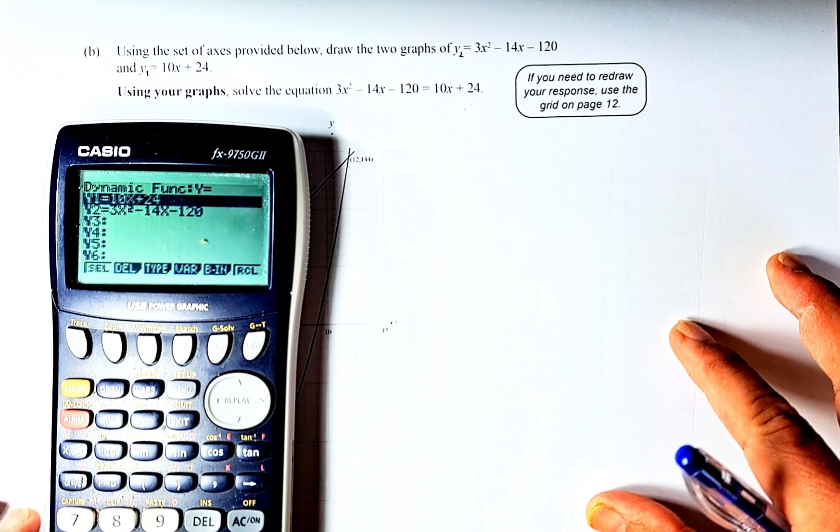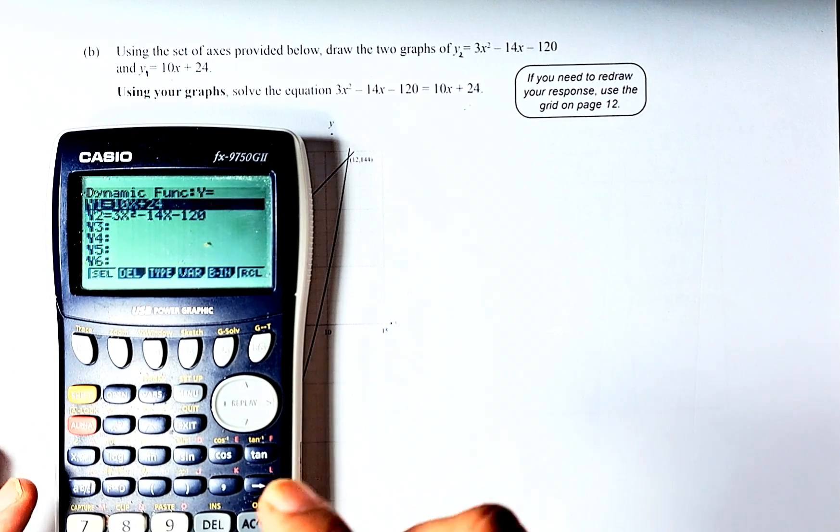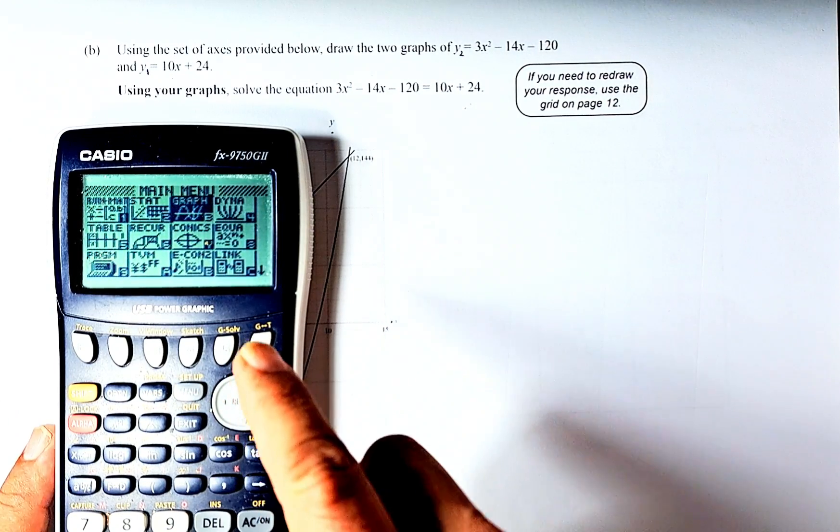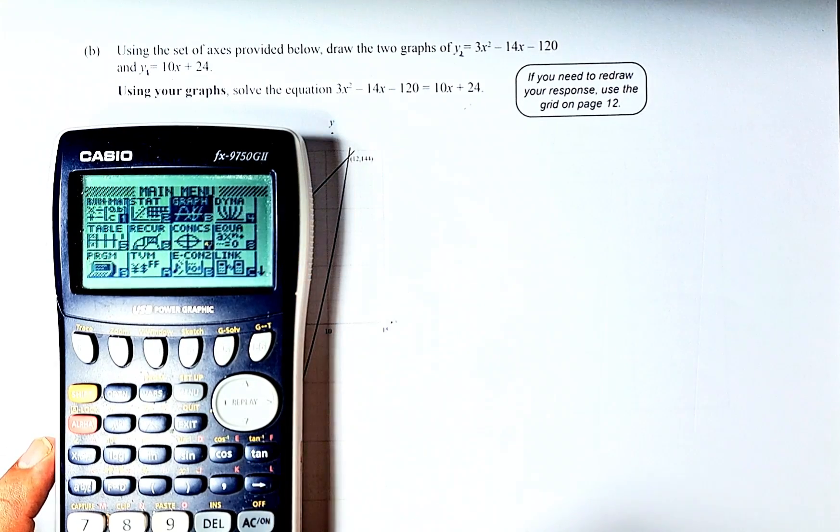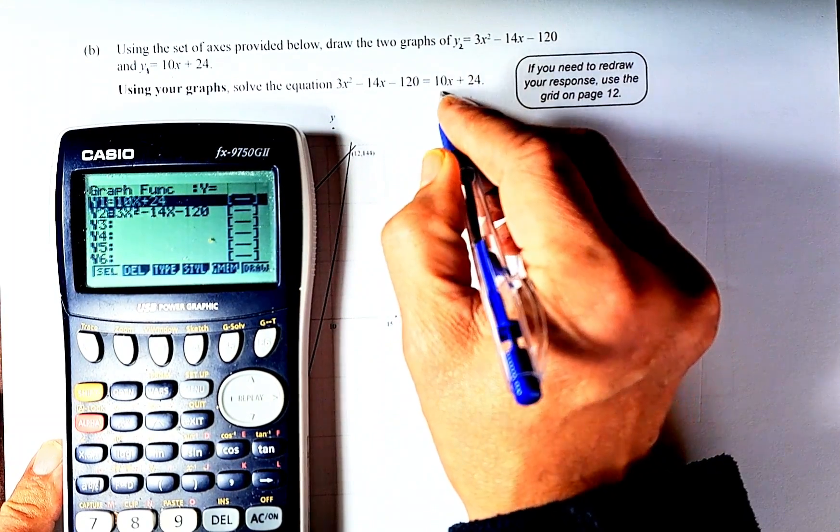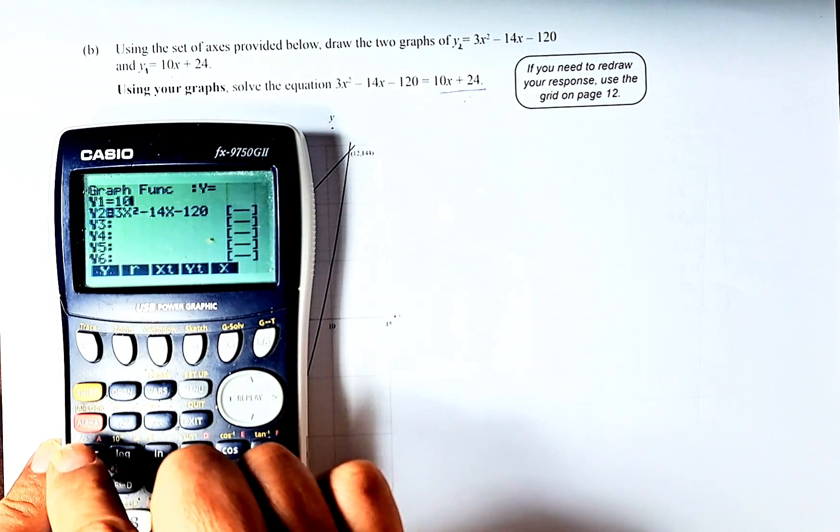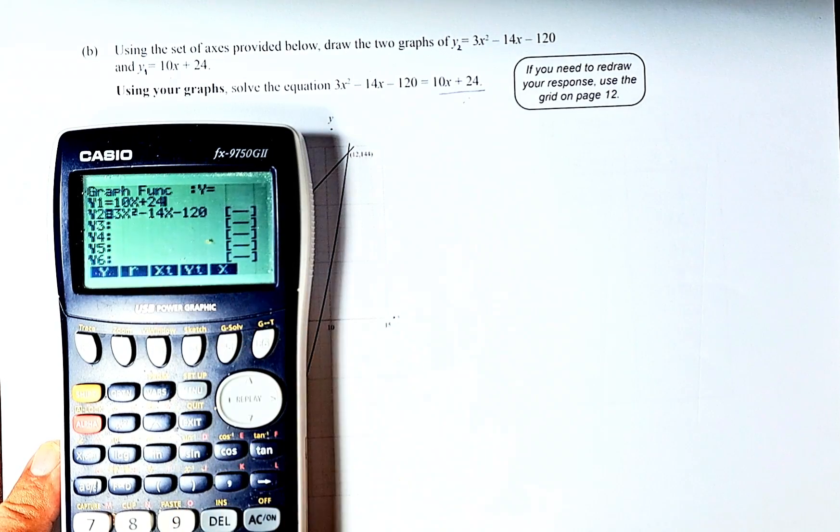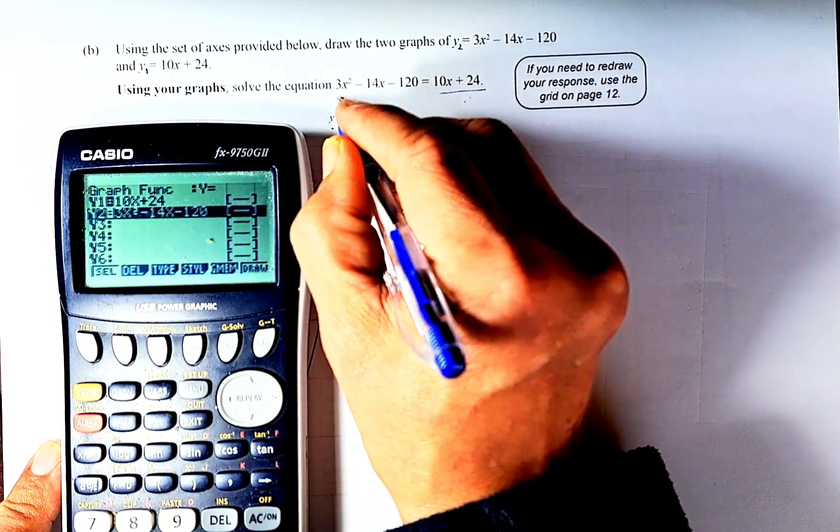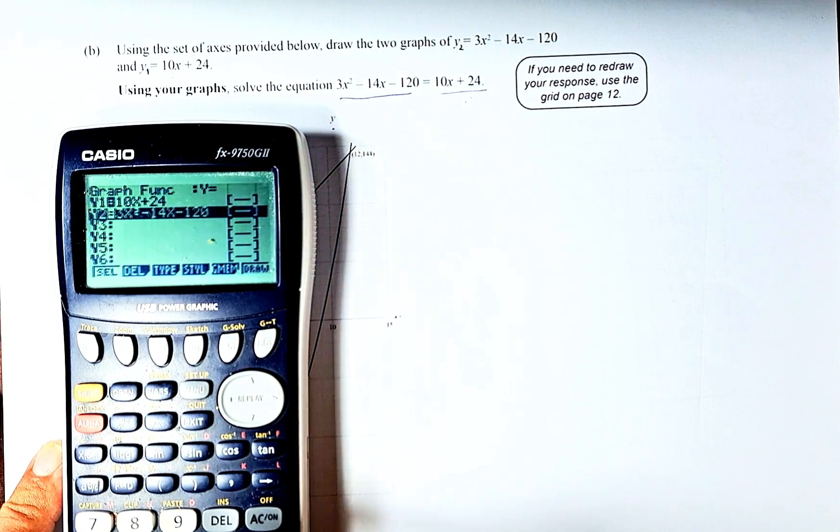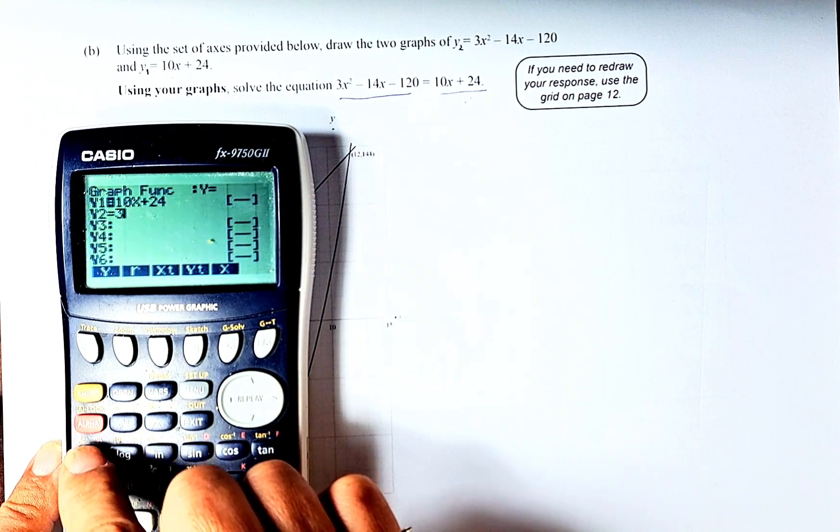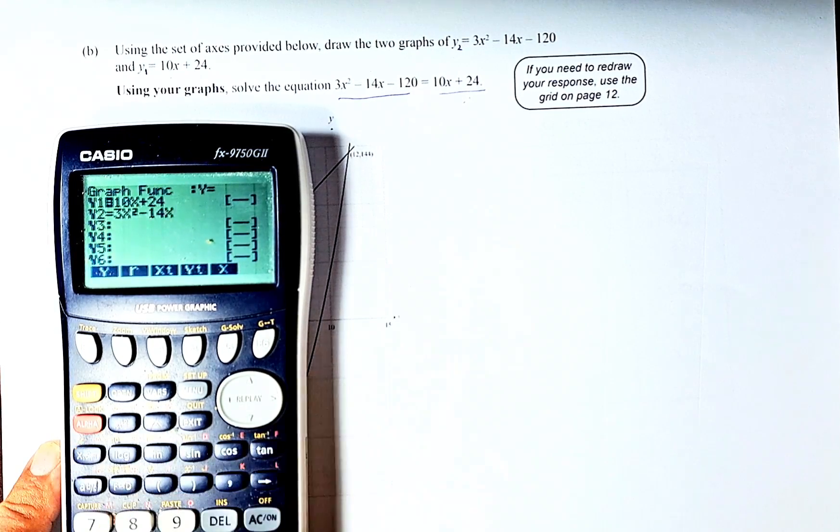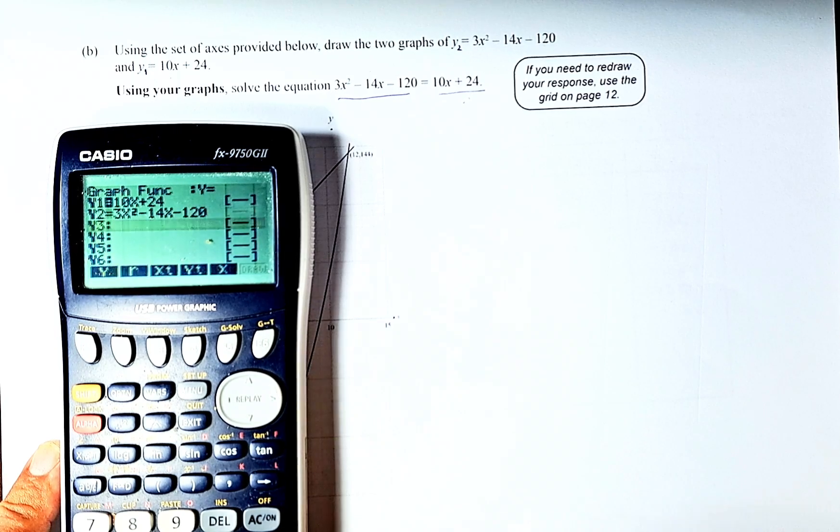I'm going to use the graphic calculator because it's much easier, but you can do it manually. Go to the graph section and press execute. Key in the first equation: 10x + 24. Then execute to get the second graph: 3x² - 14x - 120. Use the X button below the red button for x and x² as needed, then execute.